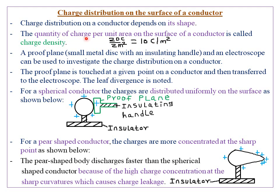So if you want to find the charge density, you simply take the quantity of charge and divide by the area of that conductor. Just like in geography, when you talk of population density, you take the number of people in a particular area and divide by the area of that region.